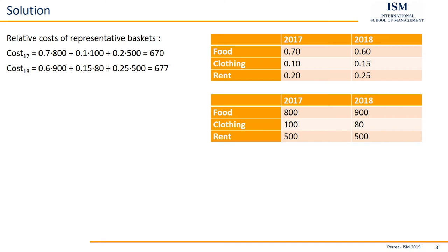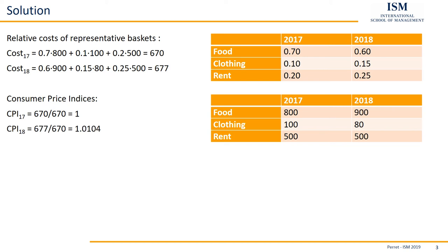In the second step, we can now calculate the CPIs. For the CPIs, we divide all of the costs calculated in the first step by the costs of the reference year — here, 2017. So we divide both cost positions by 670. We get a CPI for 2017 of 1, because we divide 670 by 670. For 2018 we get 677 divided by 670, giving a CPI of 1.0104 — so we have an increase.